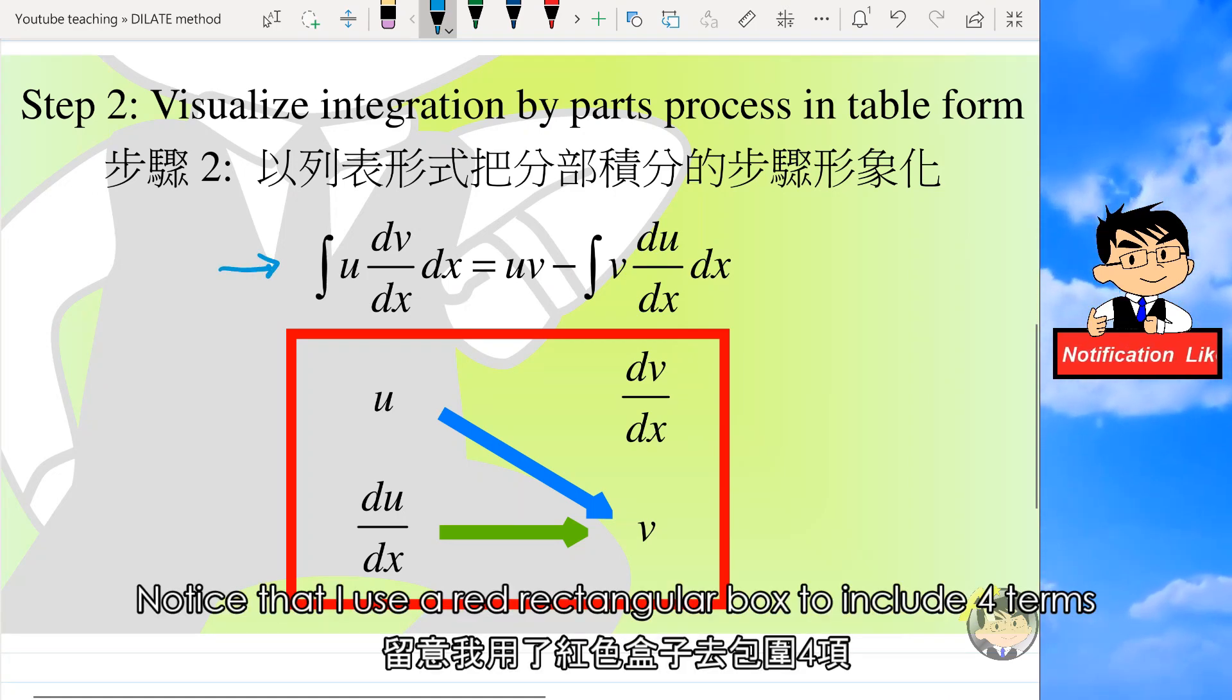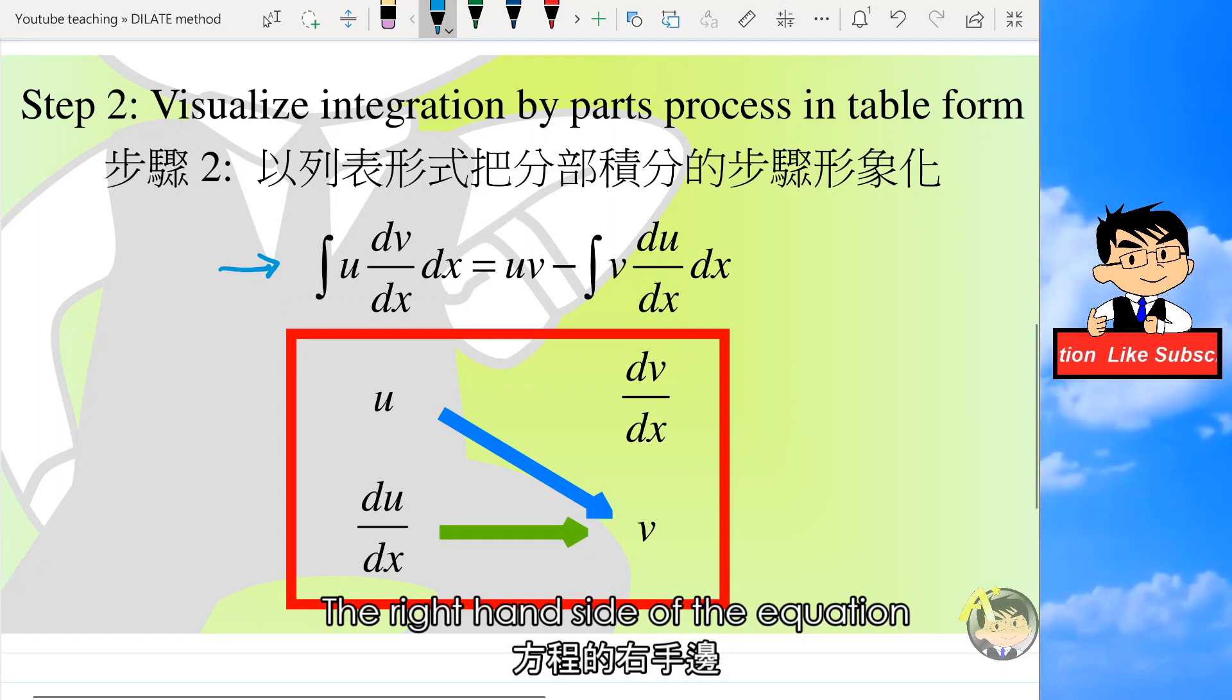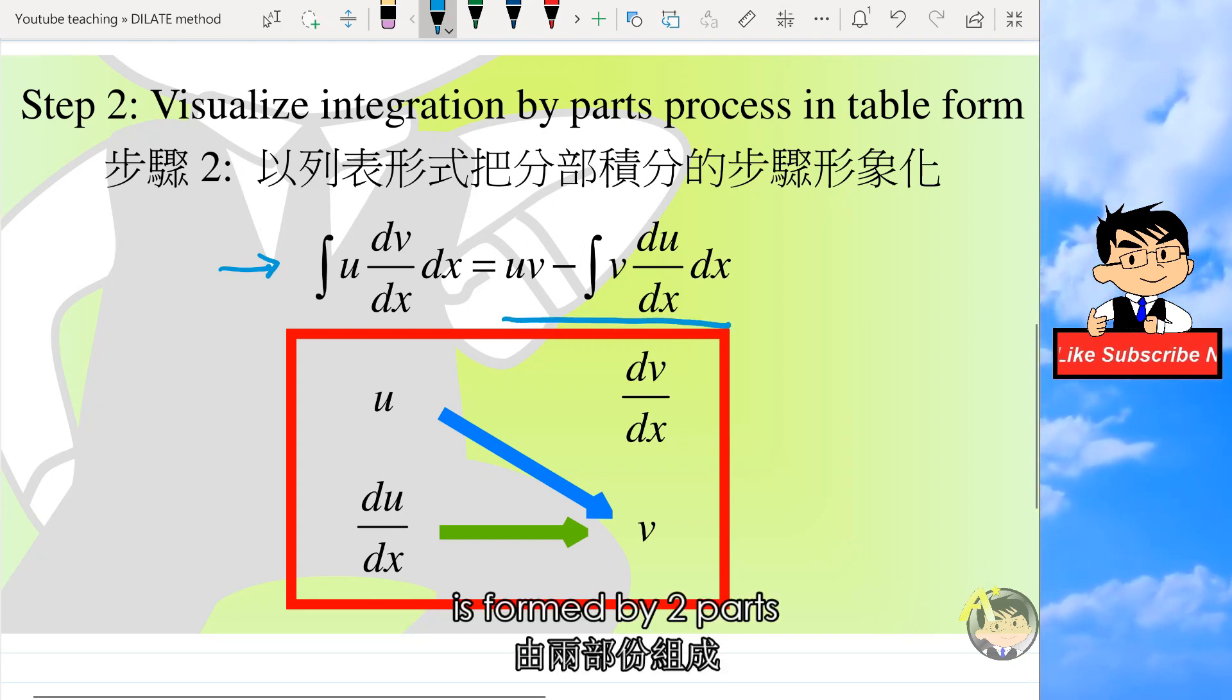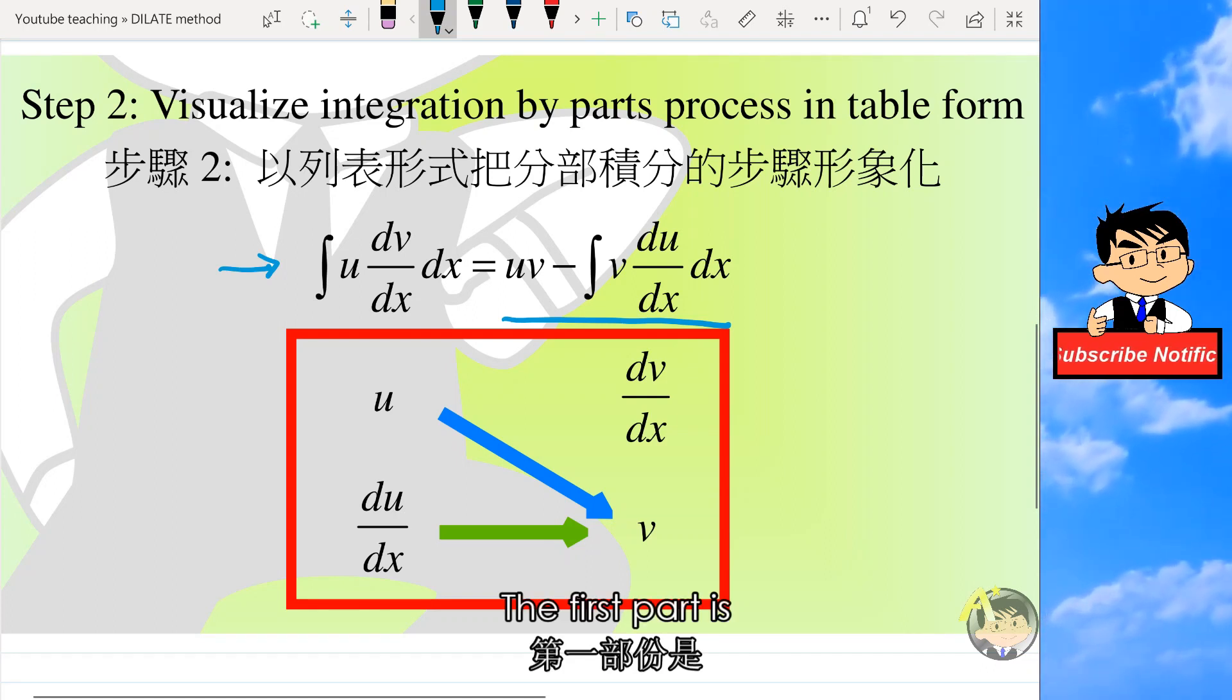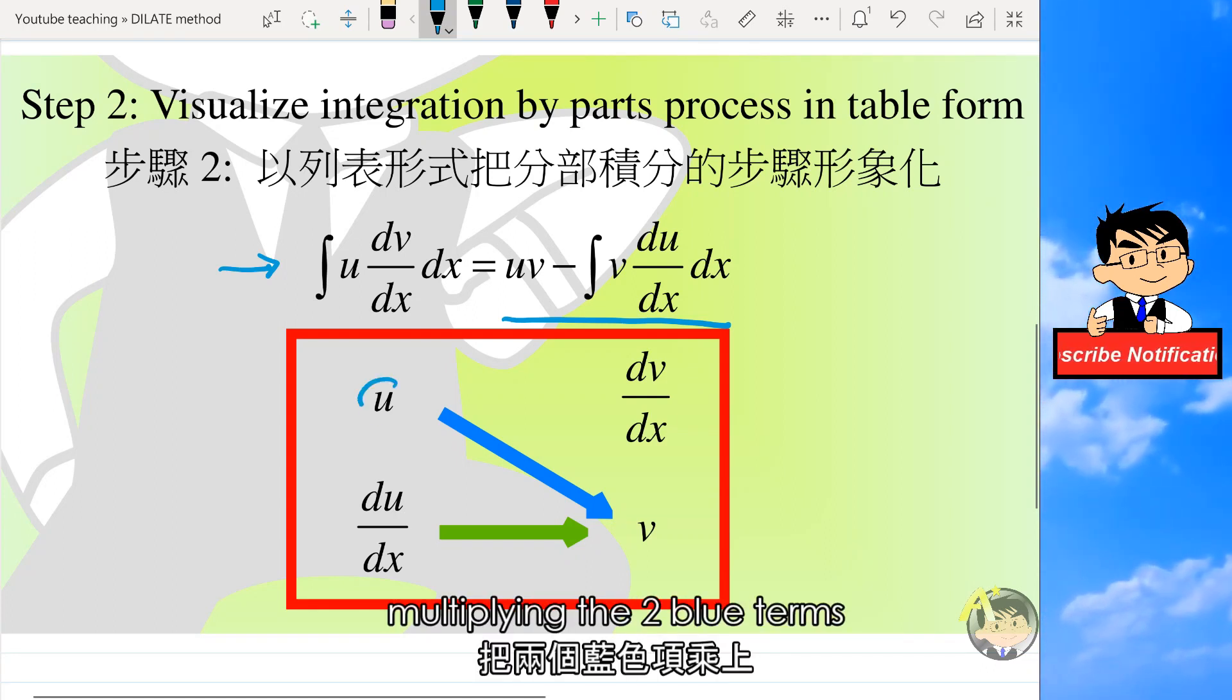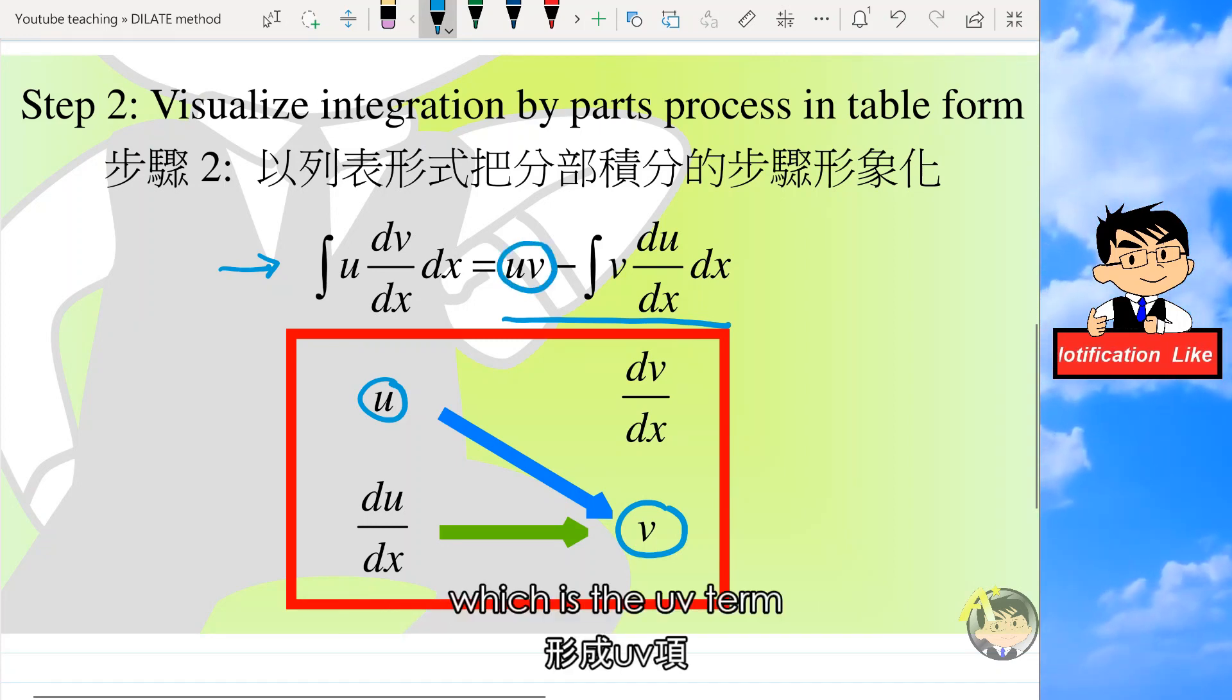Notice that I use a red rectangular box to include four terms. The right-hand side of the equation is formed by two parts. The first part is multiplying the two blue terms with the blue arrow, which is the uv term.